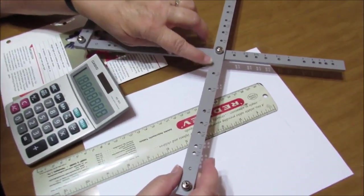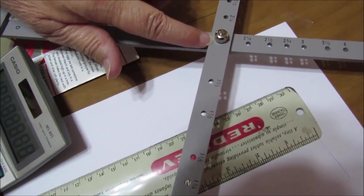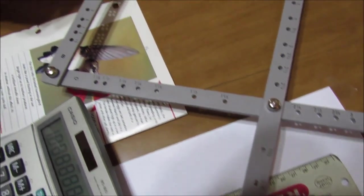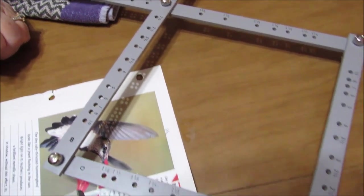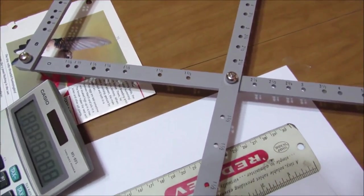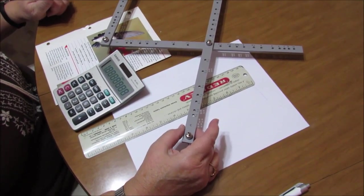So two on the different scales, and they both have to be exactly the same on both sides of the pantograph. And then you're ready to go.